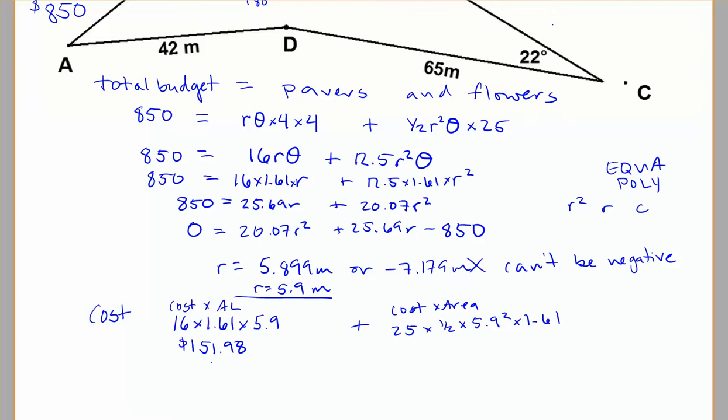Did it differently on my sheet before. So 16 times 1.61 times 5.9, that's roughly $151.98. So we might just say $152 there roughly. And here for my total cost for the flowers, that's going to be $698.68. And when we add these two together, what do we get?